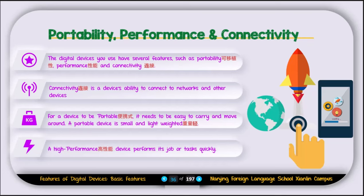A high-performance device performs its job or task quickly. If your device is high-performance, it can perform your job quickly. For example, if you want to play a game on the phone, it can smoothly play that game. Or if you want to open Photoshop, it can run Photoshop very smoothly. If your device performance is not very good and you open Photoshop, when you click on something, you have to wait. But if the performance is good, you just click, it completes the task and moves on.